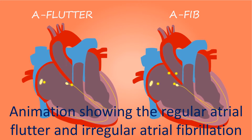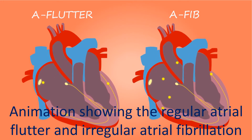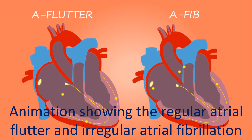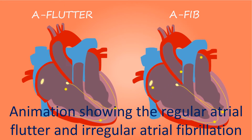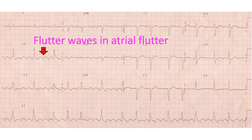When there is only 2 to 1 conduction to the lower chambers, the ventricles beat at 150 per minute. At this rate, it may be mistaken for other types of fast rhythms originating above the ventricles. Atrial flutter can be seen in the ECG as saw-tooth shaped flutter waves representing the activity of the upper chambers.